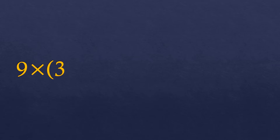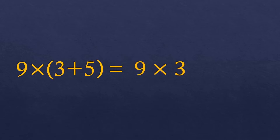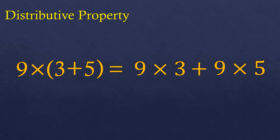Now let's have the expression 9 times (3 plus 5), which has parentheses. This can be written as 9 times 3 plus 9 times 5. So if you have 9 times a sum enclosed in parentheses, you can distribute to get 9 times 3 plus 9 times 5. That is according to the distributive property — you are distributing the 9 to both 3 and 5.